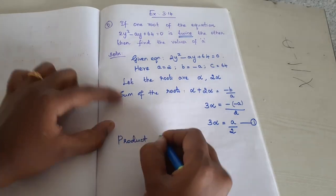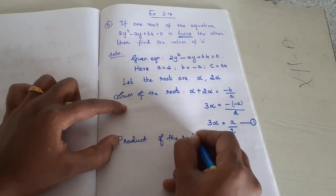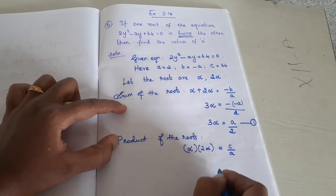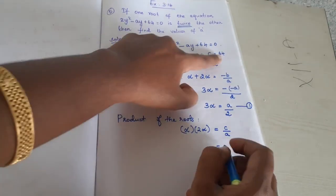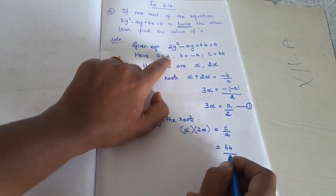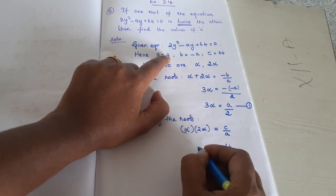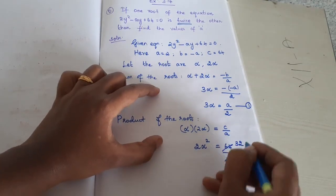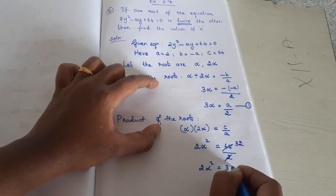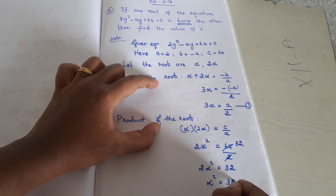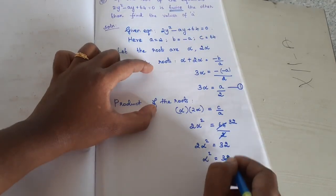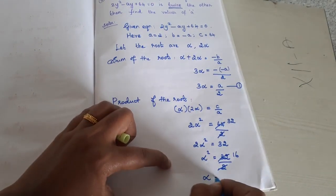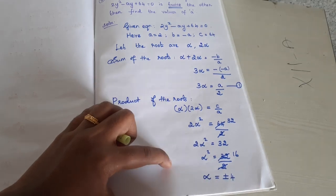Then we find the product of the roots. Product means alpha into 2 alpha, equal to c by a, which is 64 divided by 2. So 2 alpha squared equals 32, therefore alpha squared equals 32 divided by 2, which gives 16. So alpha squared equals 16 means alpha equals plus or minus 4. Two cases arise.